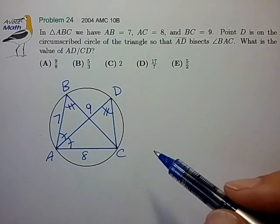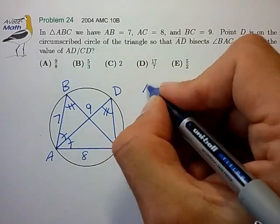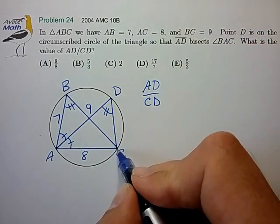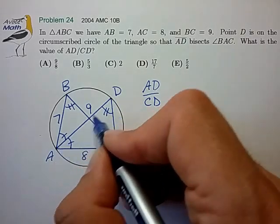Now, it looks like we're trying to find the ratio of AD over CD. So, AD over CD.